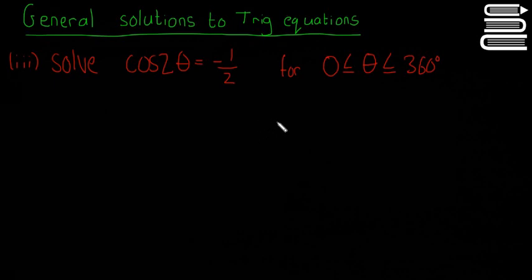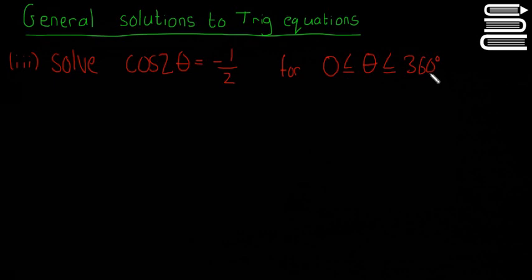So this is going to be our last video on trig equations. It's probably the most difficult question — there's just a little bit more to it than the other videos. So I'll read through it first anyway. Question 3: solve cos of 2 theta is equal to minus a half, for theta between 0 and 360 degrees.